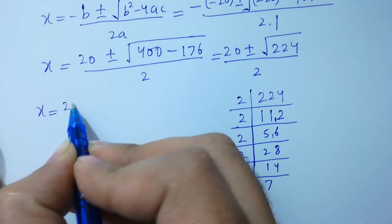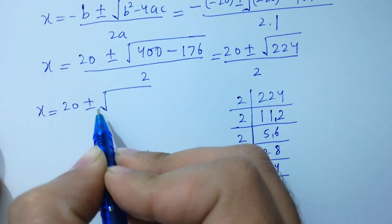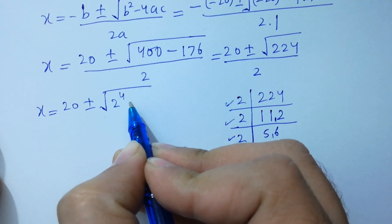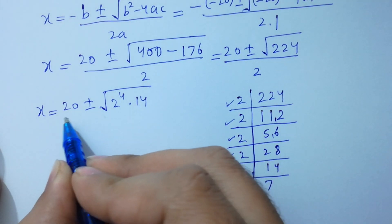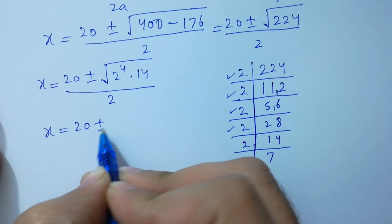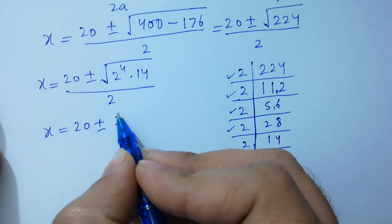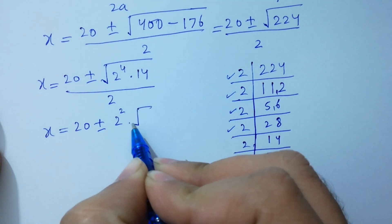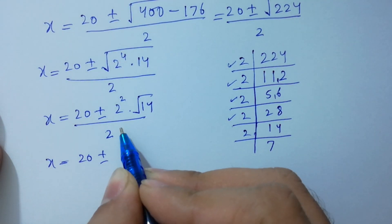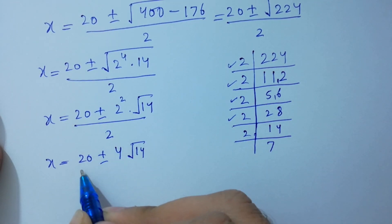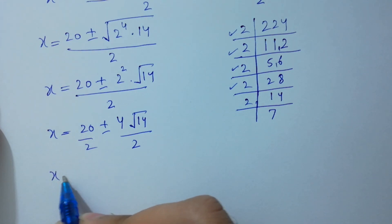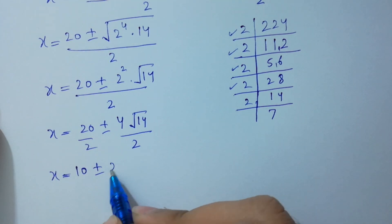So x equals 20 plus or minus the factors of 224, which is 2 to the power 4 times 14, over 2. This gives x equal to 20 plus or minus square root of 2 to the power 4 times 14, over 2. Which simplifies to 20 plus or minus 4 square root of 14, all over 2.